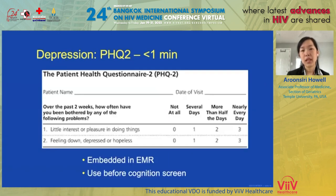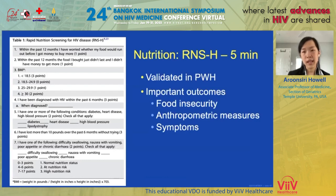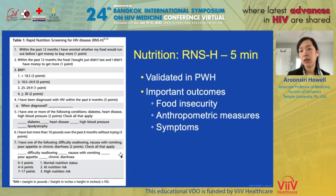For depression, I recommend the PHQ-2, which takes less than one minute and is usually embedded in most electronic medical records. Screen for depression before doing cognition screening, because depression can present as pseudodementia — if not well controlled, it can falsely lower cognitive screening scores. For nutrition, I recommend the RNSH, which takes about five minutes. It's the only nutrition tool validated in people with HIV, and it looks at important outcomes like food insecurity, anthropometric measures like BMI, and symptoms related to nutrition such as difficulty swallowing, nausea, vomiting, or diarrhea.